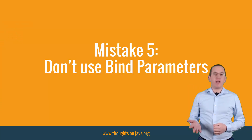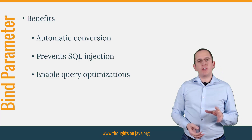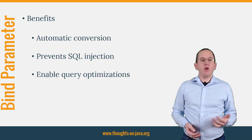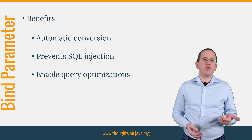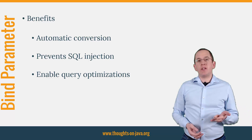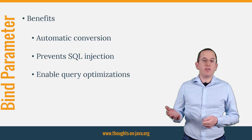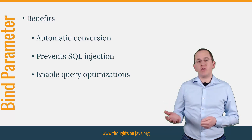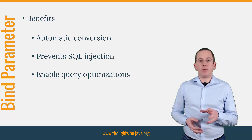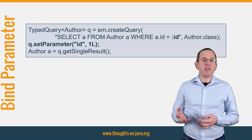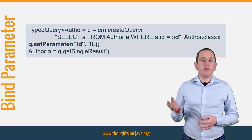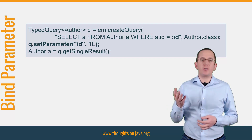Mistake number 5: Don't use bind parameters. Bind parameters are simple placeholders in your query and provide a lot of benefits. They are extremely easy to use — Hibernate performs the required conversions automatically. Hibernate also escapes strings automatically, which prevents SQL injection vulnerabilities. They also help you implement a high-performance application. Most applications execute a lot of the same queries which just use a different set of parameter values in the where clause. Bind parameters allow Hibernate and your database to identify and optimize these queries. You can use named bind parameters in your JPQL statement — each named parameter starts with a colon followed by its name. Then call the setParameter method on the query interface to set the bind parameter value.